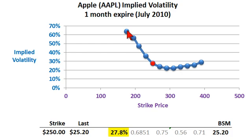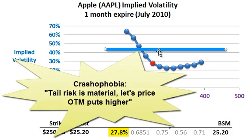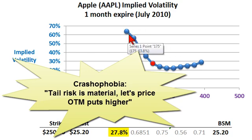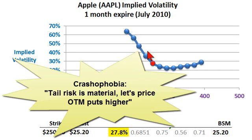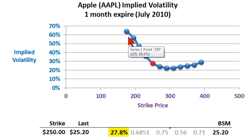Finally, an interesting implication for FRM exam candidates is the concept of crashophobia. Before Black Monday in 1987, the volatility smile was more or less flat. The crashophobia hypothesis, suggested by Rubenstein, is that after the crash, traders became much more concerned about tail risk for out-of-the-money puts. If you're selling an out-of-the-money put, you want to attach more probability to that heavy tail, so those options get priced higher. This higher implied volatility for out-of-the-money puts reflects that crashophobia idea.